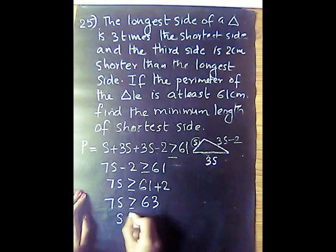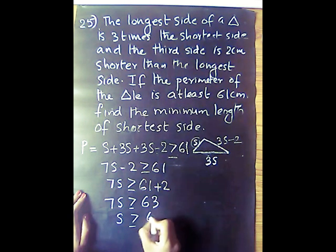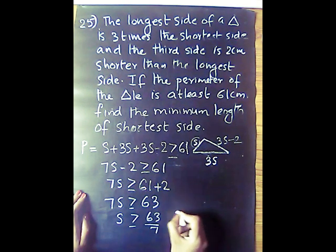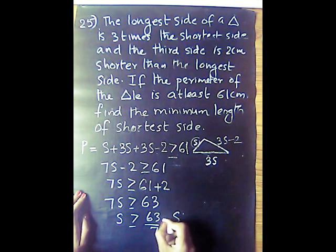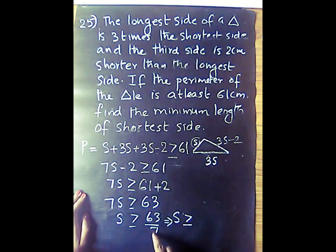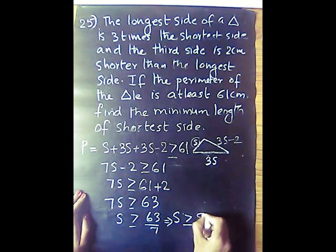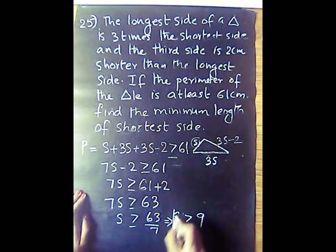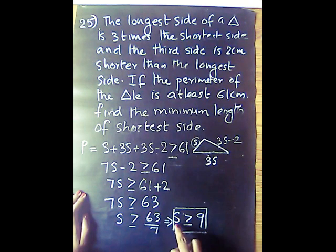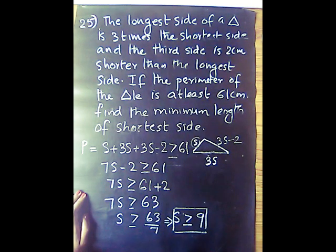So s is greater than or equal to 63 divided by 7, which equals 9. Therefore the shortest side is greater than or equal to 9.